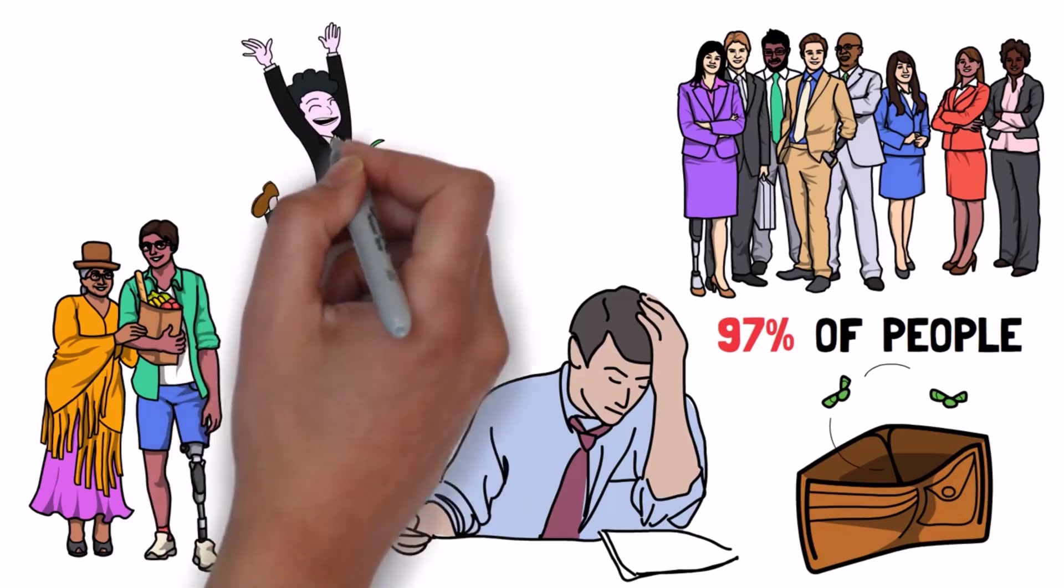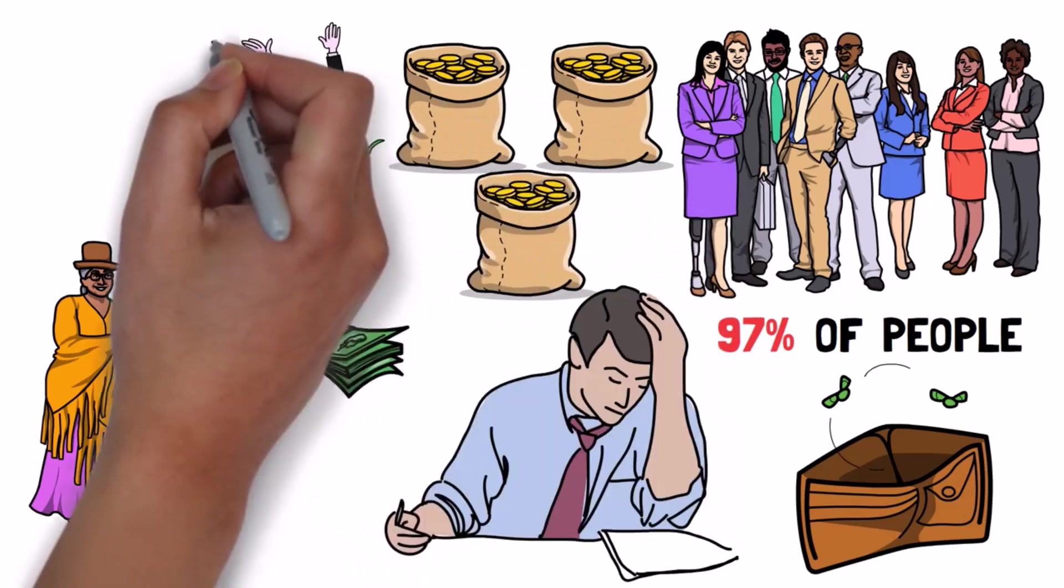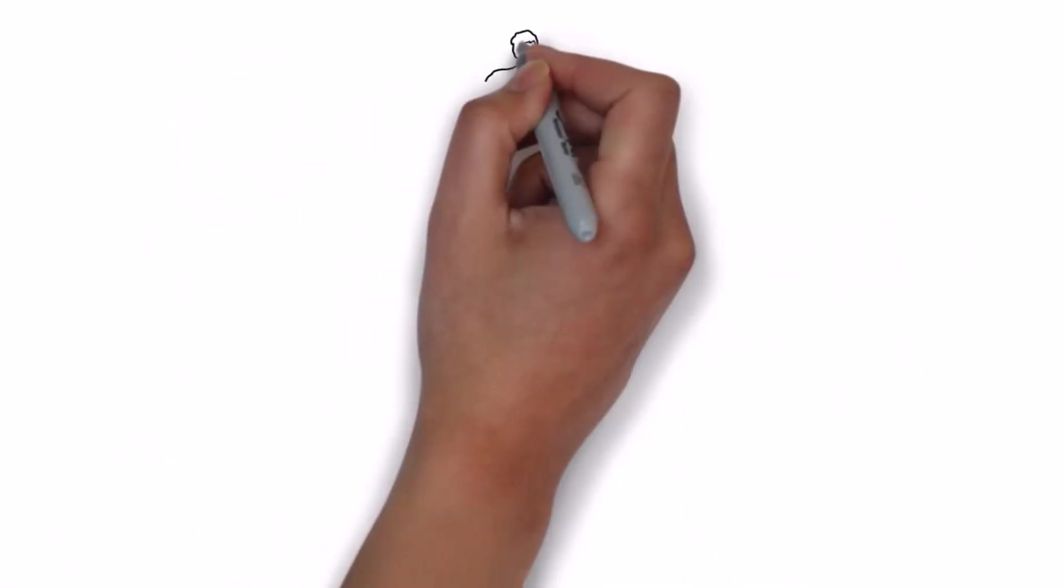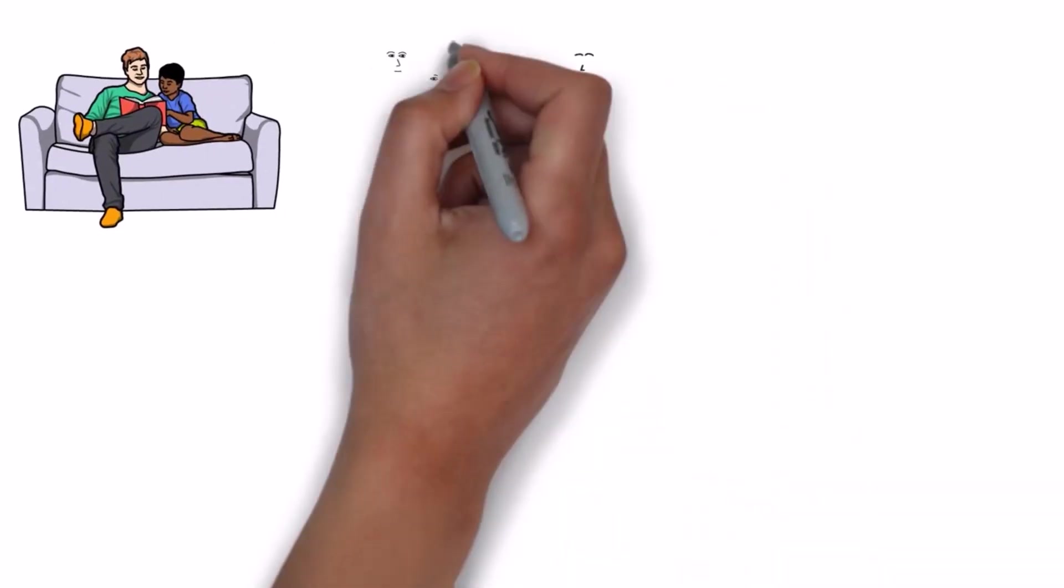We have seen countless examples where people didn't just inherit millions of dollars, but rather billions of dollars, and they managed to go broke. So, one of the best things your parents can give you is financial education.